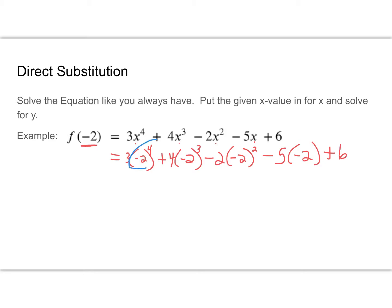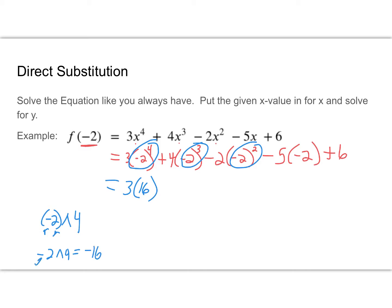According to order of operations, PEMDAS says exponents first. Watch out: negative 2 to the 4th is positive 16. When you plug it into a calculator, use parentheses around the negative 2 when it's your base, otherwise your calculator may say negative 16 because it's confused by the negative out front. Continuing: negative 2 cubed is negative 8, negative 2 squared is positive 4. So we have 3 times 16, plus 4 times negative 8, minus 2 times positive 4, minus 5 times negative 2, plus 6.